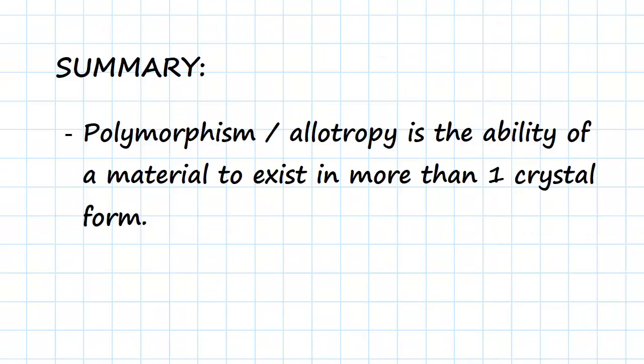So that was just a quick one, but in summary, polymorphism or allotropy is the ability of a material to exist in more than one crystal form.